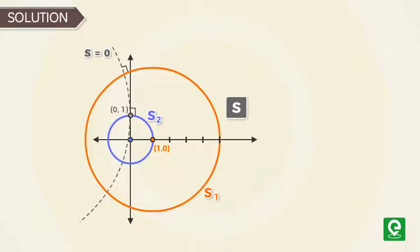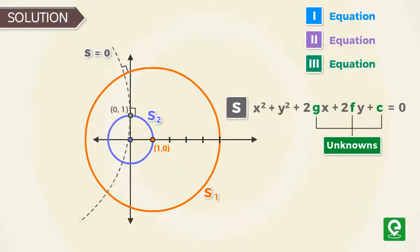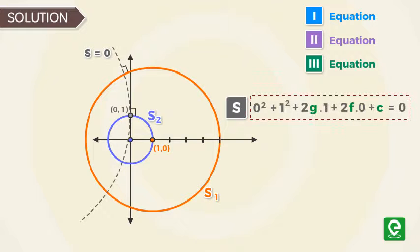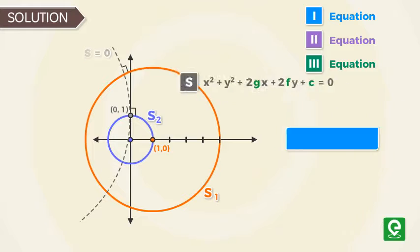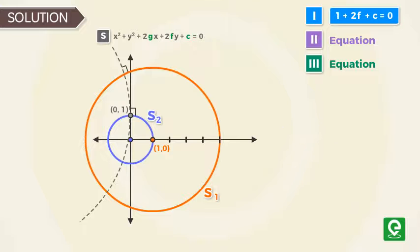Let us assume the equation of circle S as x² + y² + 2gx + 2fy + c = 0. Here we have three unknowns so we need three equations to solve for the circle. Since the circle passes through (0, 1), the point should satisfy S = 0. That is, 1 + 2f + c = 0. Let's call this equation 1.